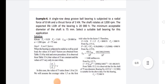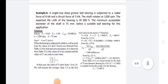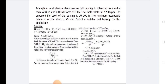Problem 2: A single row deep groove ball bearing is subjected to a radial force of 8 kN and a thrust force of 3 kN. The shaft rotates at 1200 rpm. The expected life L10h of the bearing is 20,000 hours. The minimum acceptable diameter of the shaft is 75 mm. Select a suitable ball bearing. Given: Fr = 8 kN, Fa = 3 kN, L10h = 20,000 hours, n = 1200 rpm, d = 75 mm.